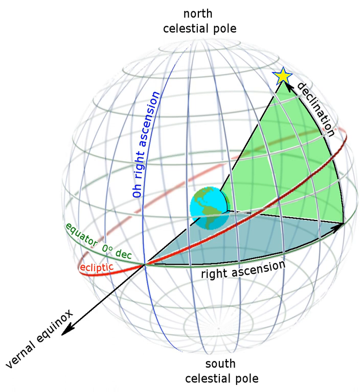The currently used standard epoch is J2000.0, which is January 1, 2000 at 12 o'clock TT. The prefix J indicates that it is a Julian epoch.